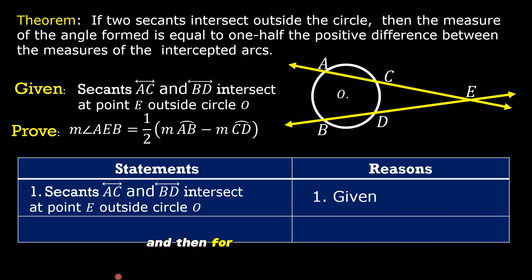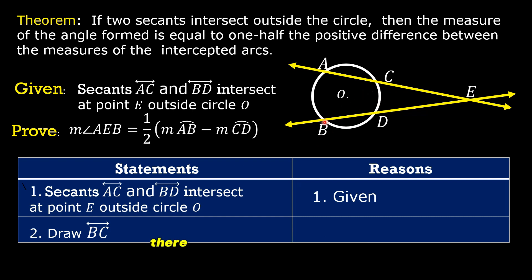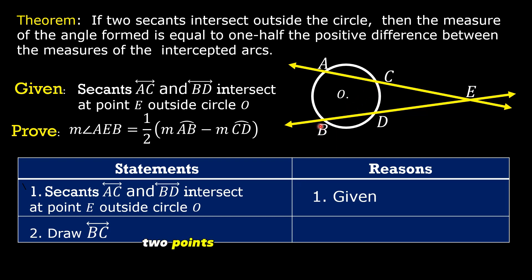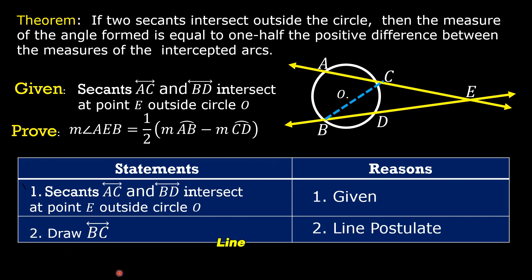For our second statement, we are going to draw line BC. There are two points here, B and C. Two points determine a straight line. So the reason is the line postulate.